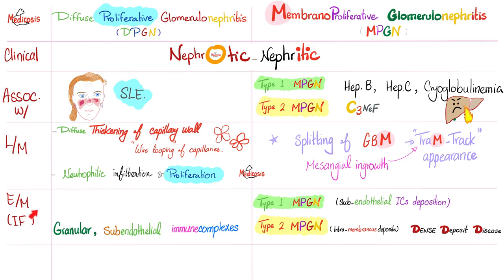Under electron microscopy using immunofluorescence, you see granular subendothelial immune complexes in diffuse proliferative. In membranoproliferative you see subendothelial or intramembranous deposits depending on whether it's type 1 versus type 2. At the end of the day, only the pathologist can make that distinction — but a good doctor can guess from the patient history. Lupus suggests diffuse proliferative; cryoglobulinemia or hepatitis C history suggests membranoproliferative. To confirm, you need a biopsy.